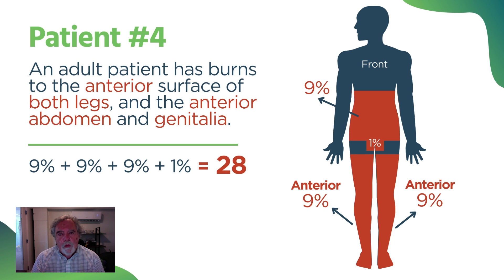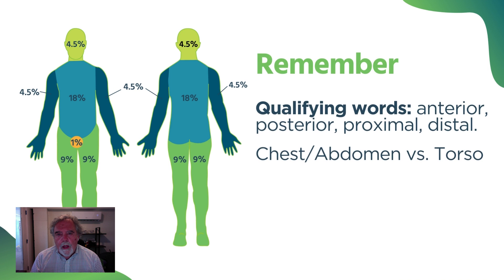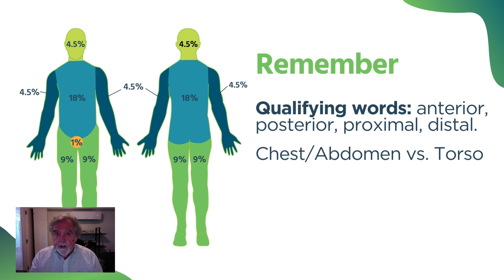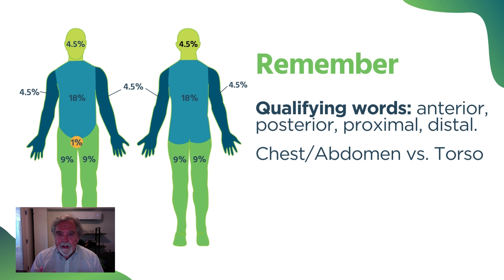To recap, there are two ways we get Rule of Nines questions wrong. First, we just don't know what the nines and the 18s are. The head, by the way, on an adult is also 9% — that rounds things out so everything is covered. Second, we don't read the question carefully enough to find those qualifying words: anterior, posterior, proximal, distal, and again, chest or abdomen versus torso. If you remember your nines and your 18s, and you read the question well, the Rule of Nines questions will be a breeze.